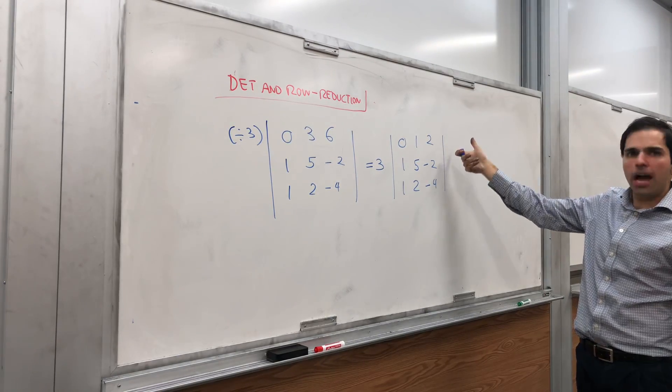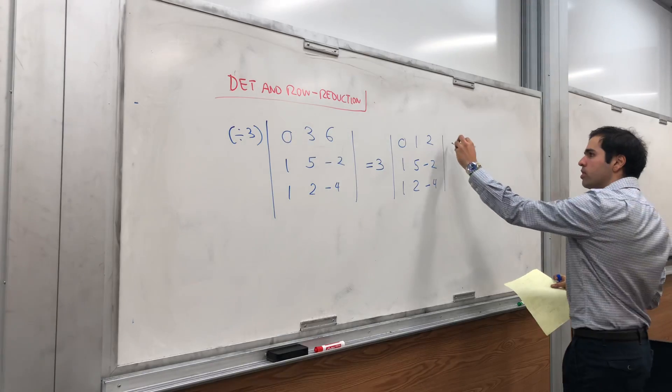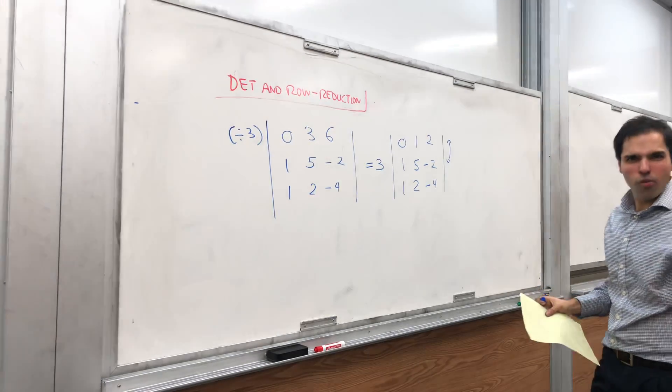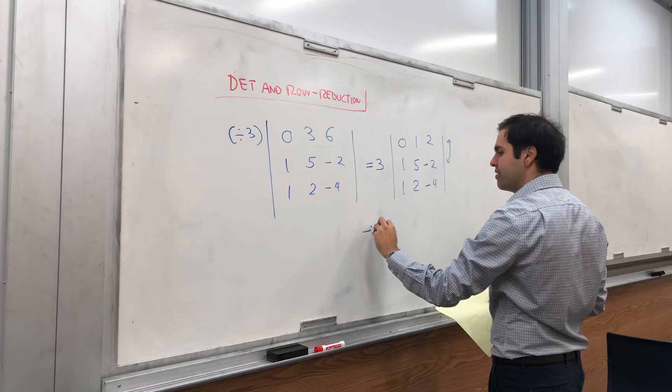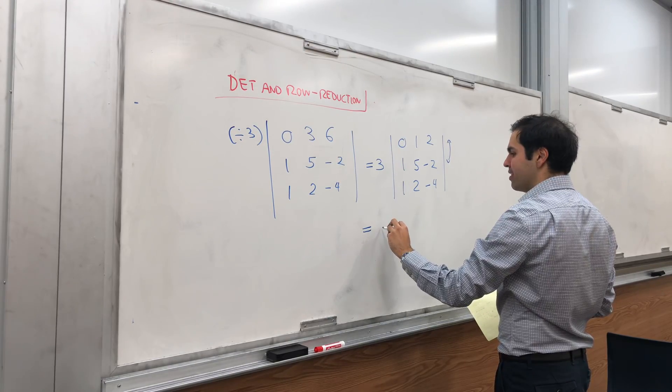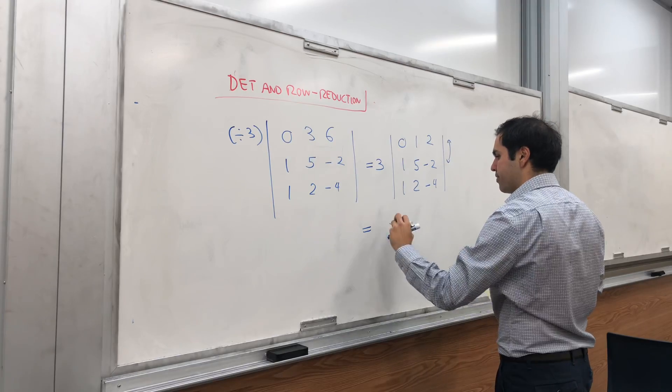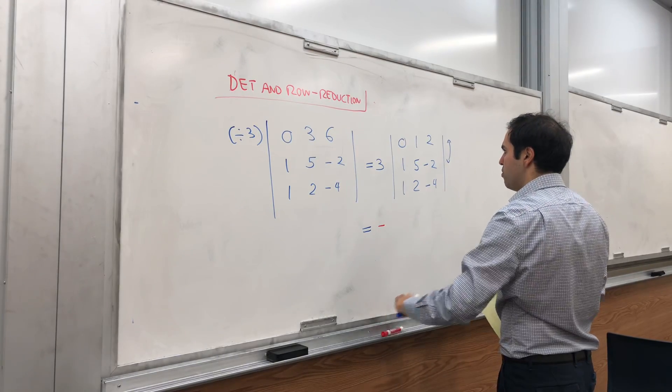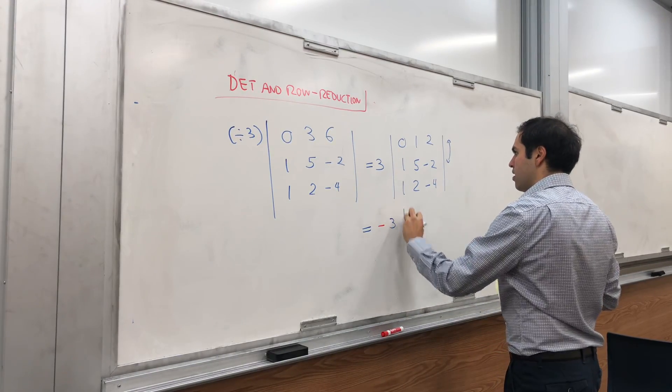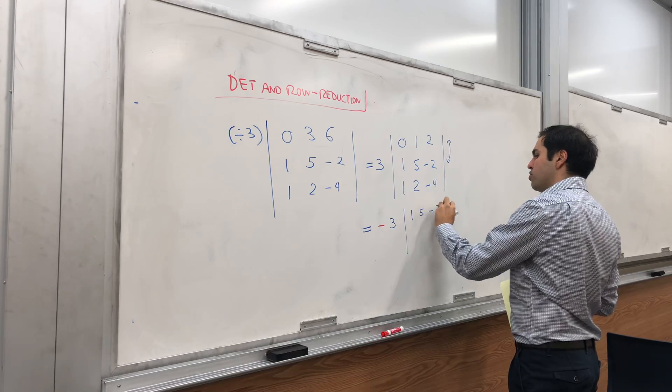Let me show you what happens if you flip two rows. If you flip two rows, weirdly it gives you a minus in front of the determinant. So this time becomes -3 times the determinant of 1 5 -2, 0 1 2, and 1 2 -4.